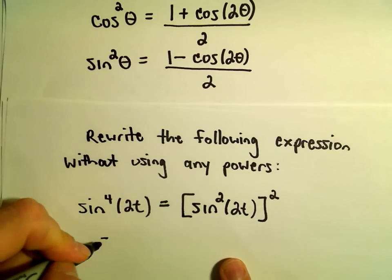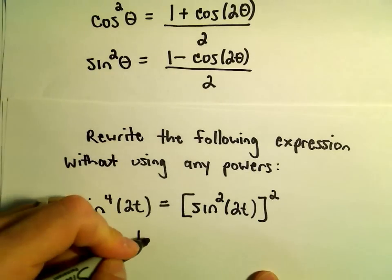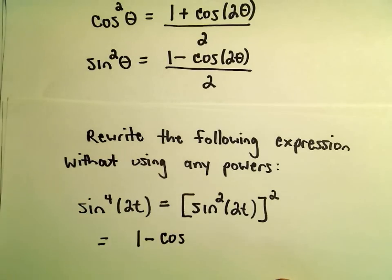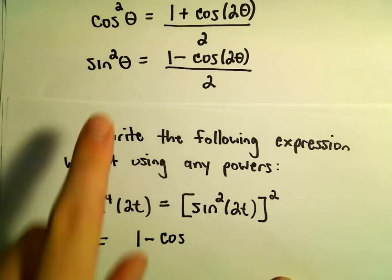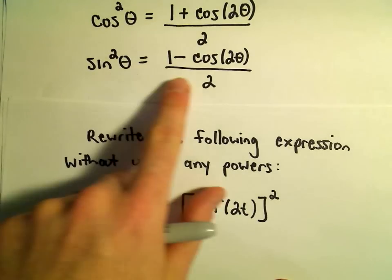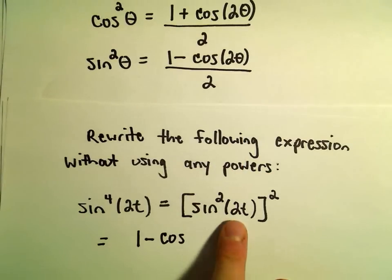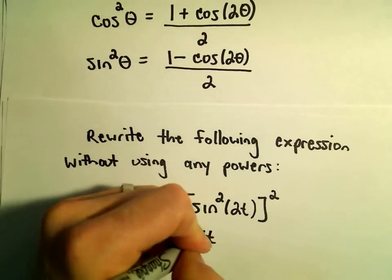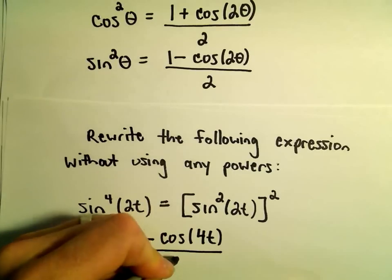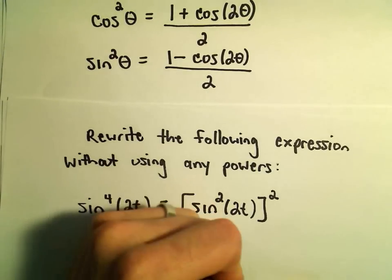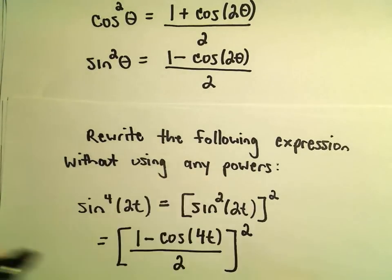Now I'm going to use the identity for sine. It says we get 1 minus cosine — normally if you have a single variable you double it. Well, now we've already got 2t, so if we double that we'll get 4t. And we divide all of that by 2. And again, this is going to get squared.